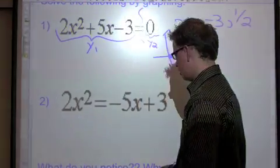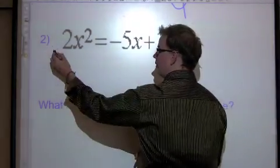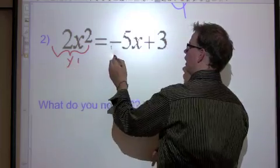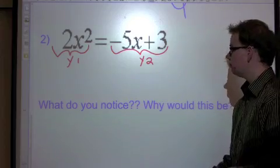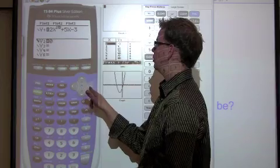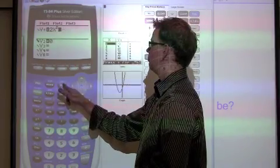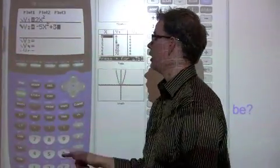Now, let's try this one. This time, 2x squared is y1. Negative 5x plus 3 is y2. So in y1, I have 2x squared. And in y2, I have negative 5x squared plus 3.